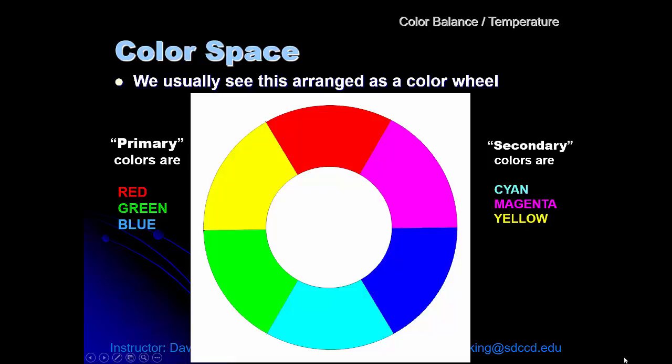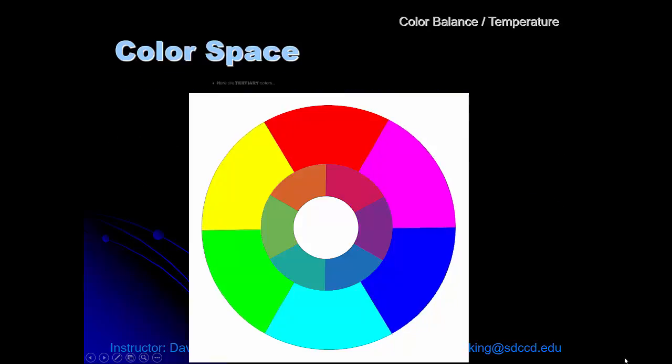There are also what are referred to as tertiary colors that from our standpoint now, working to control color, are less important. But in terms of using color, understanding how colors are made and what colors work together, seeing these tertiary colors on this color wheel can be really important.